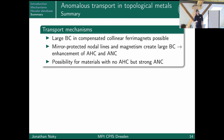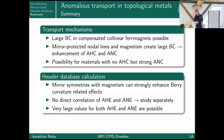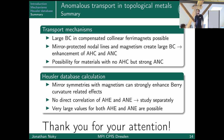In summary, I showed you different transport mechanisms that can enhance anomalous Hall and Nernst effects: either through Weyl points in compensated collinear ferrimagnets, or through nodal lines that are gapped out by magnetism. These same effects can also be recovered when looking into a large number of calculated compounds. Thank you for your attention.